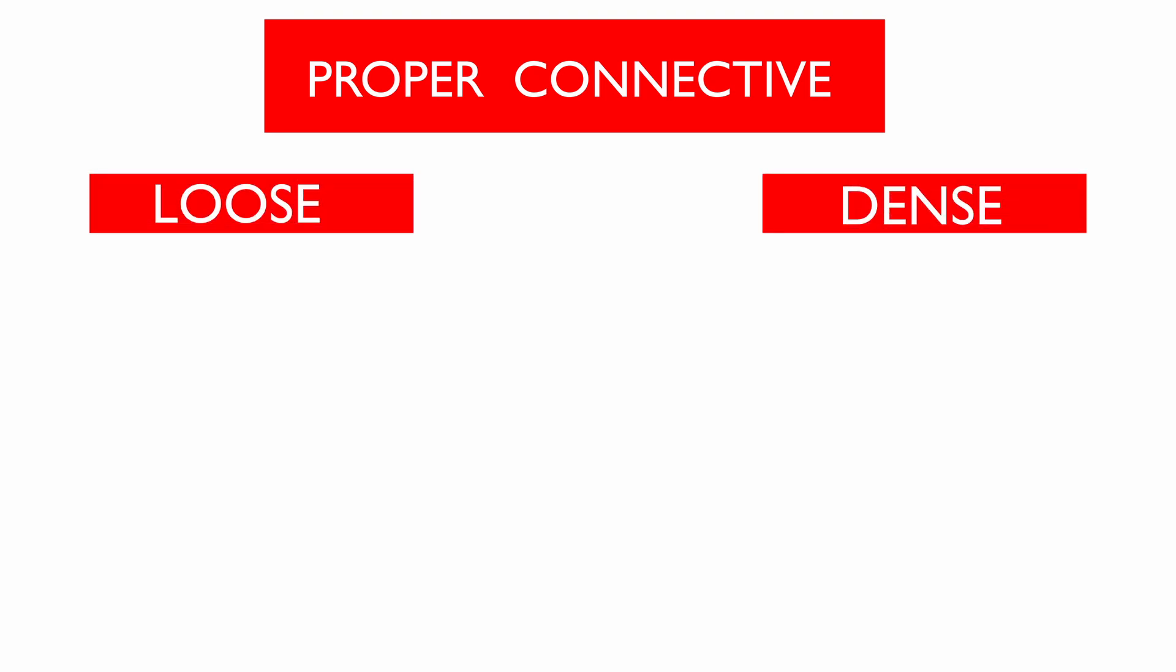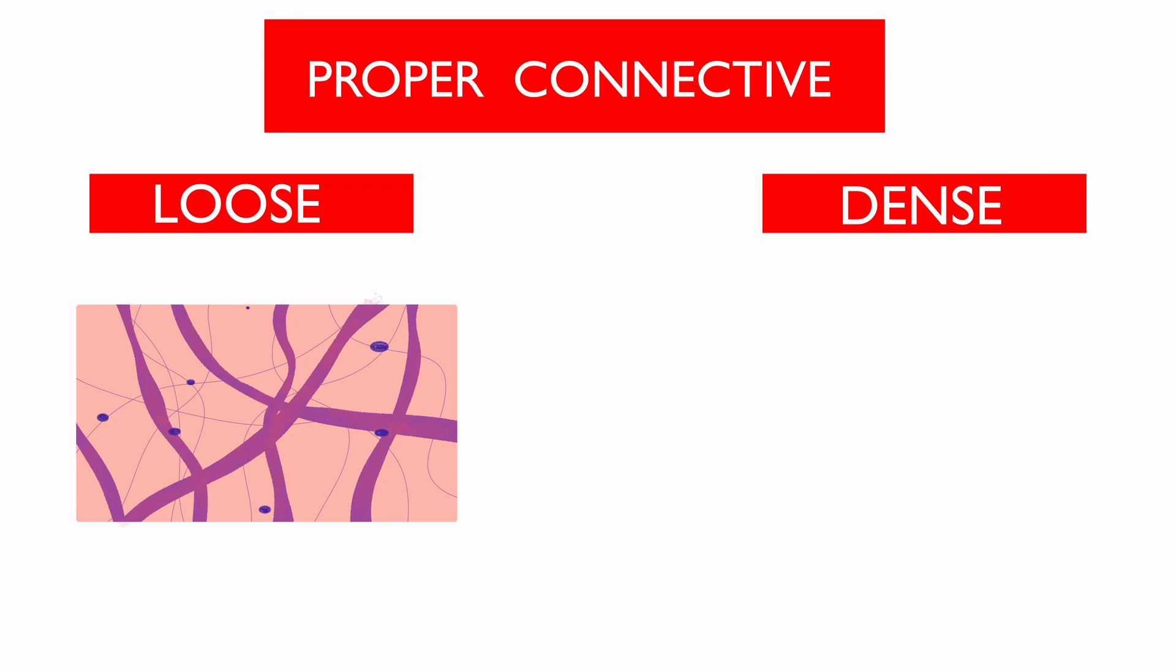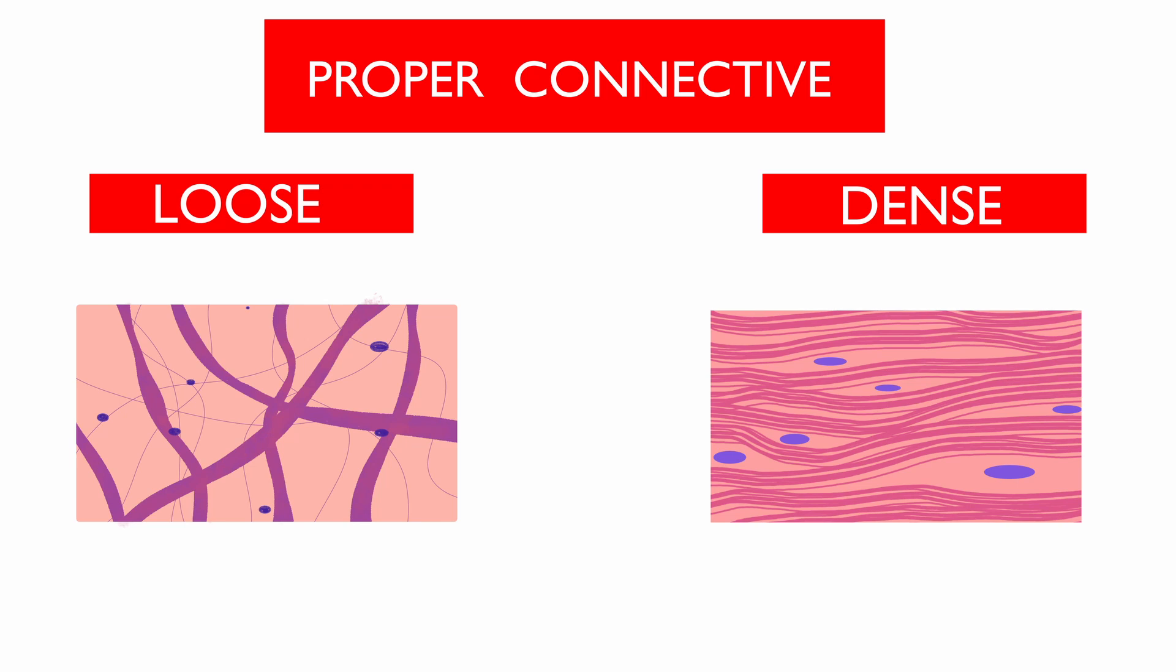Under proper connective tissue, the difference between loose and dense connective tissue is that loose connective tissue has more matrix and fewer fibers, whereas dense connective tissue has less matrix and more fibers.